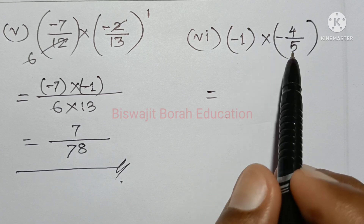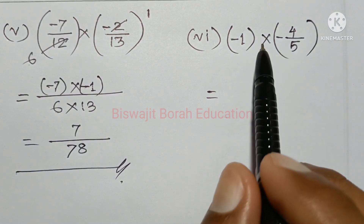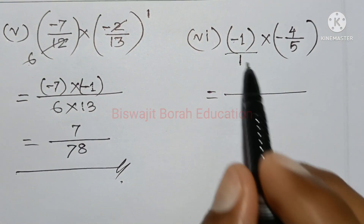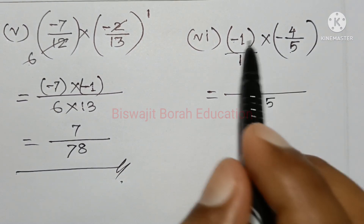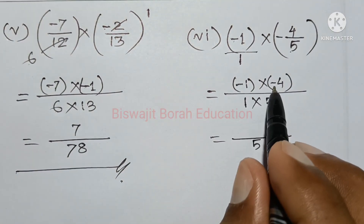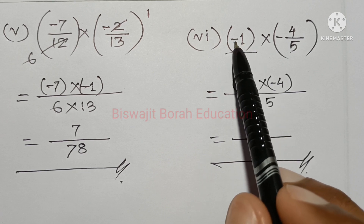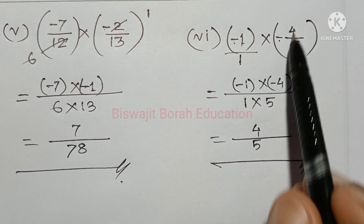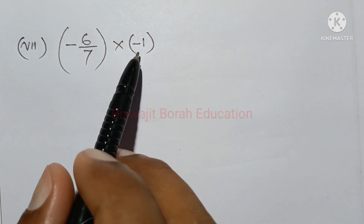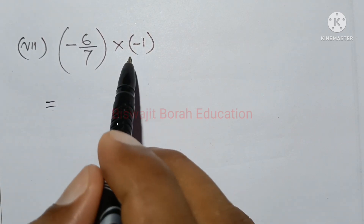So considering that, I will complete the calculation. Taking the negative 4, multiplied by 1 into negative 5, using the standard method.